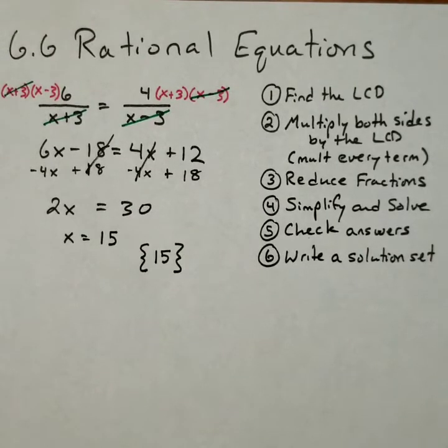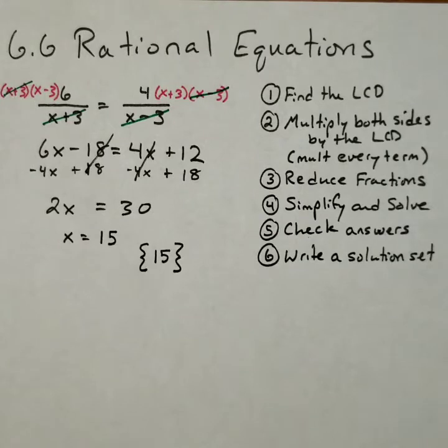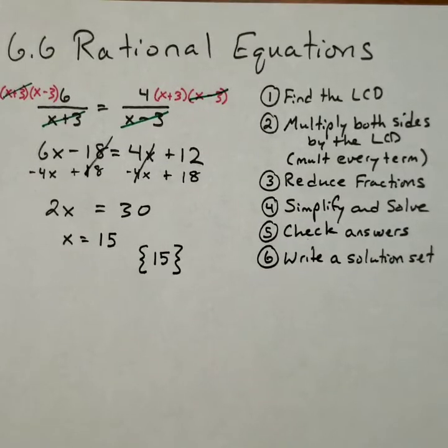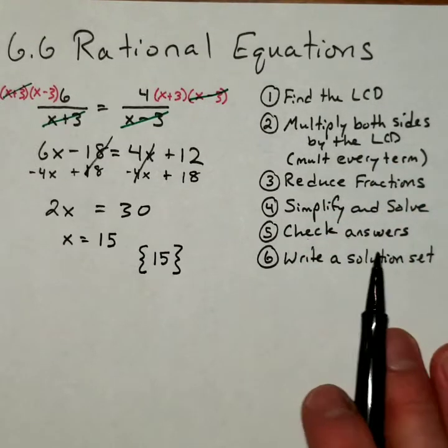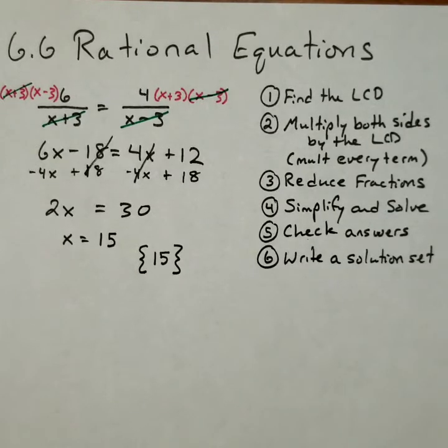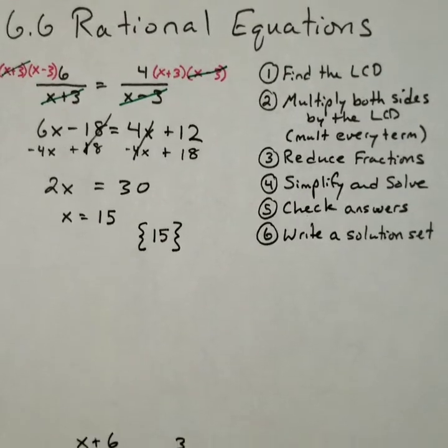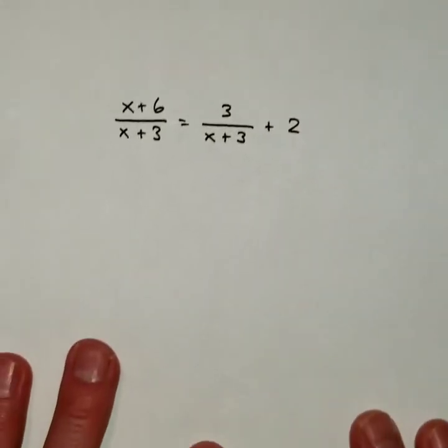Okay, so that takes us through our six steps. Another example, and again, I'm not going to have the six steps written down in every example, so we'll just try to keep in mind those steps as we go. Find the LCD, multiply both sides by it, reduce the fractions, simplify and solve, check your answer, and write out a solution set. Okay, so here's our next example.